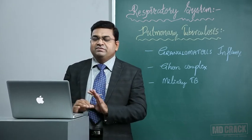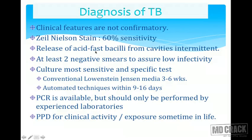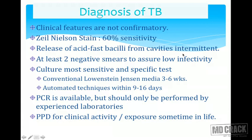There are many diagnostic methods for tuberculosis, but the gold standard is still the Ziehl-Neelsen stain, though it has around 60 percent sensitivity — problems arise mainly from staining technique errors. Clinical features such as recent weight loss, evening rise of temperature, and productive cough help to suspect the case but are not confirmatory. The release of acid-fast bacilli from cavities is intermittent, so one sputum examination may not be conclusive — two or sometimes three samples should be done.